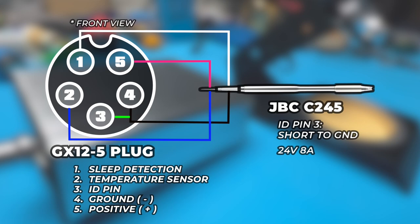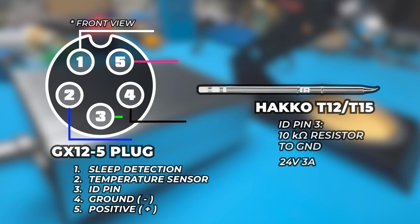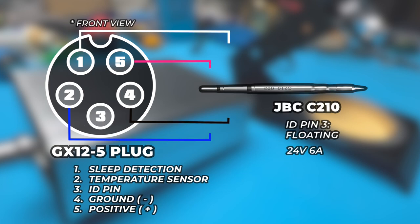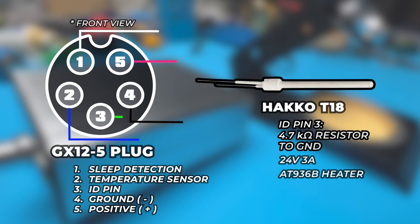The ID pin for the JBC C245 is shorted to ground and requires 24V and at least 8A. The ID pin for the Hakko T12 requires a 10K ohm resistor to ground and requires 24V and 3A. The ID pin for the JBC C210 is left floating, so there is no connection, and requires 12V and 6A. The ID pin for the Hakko T18 tip requires a 4.7K ohm resistor to ground and requires 24V and 3A.